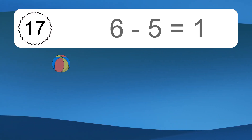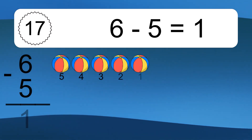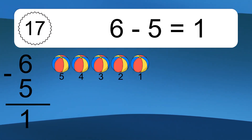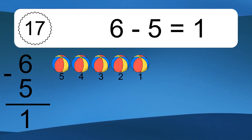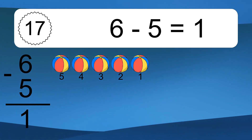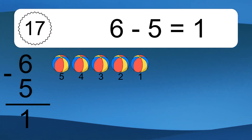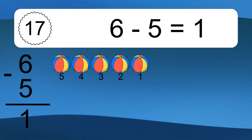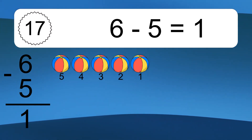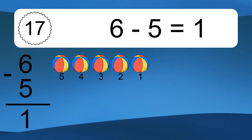6 minus 5 equals what? 6 minus 5 equals 1. Let's count it. 5, 4, 3, 2, 1.